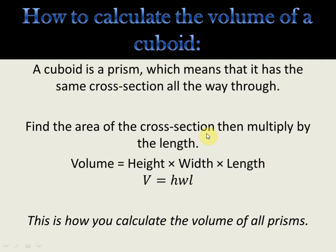Now we calculate the volume of a cuboid. The formula is: multiply the three sides — height × width × length. Volume refers to a 3D figure that occupies space, liquid, or gas. So volume of a cuboid = H × B × L (also written as HWL). This gives the amount of space inside the cuboid.